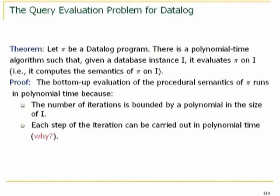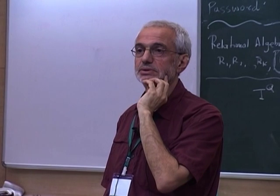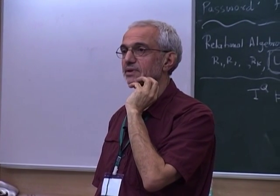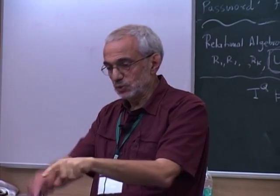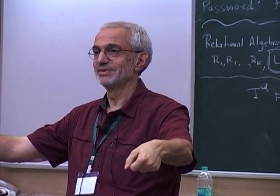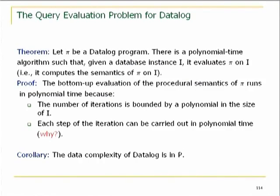Since we saw before that we can do data complexity in log space, why can't we do this in log space also? The reason is we have to carry along the relation we are building — we have to store it, and that's polynomially large. So you cannot do datalog in log space unless very strange things happen. The bottom line: the data complexity of datalog is in P. This is very important because you wanted to add recursion but didn't want the complexity to go outside polynomial time.